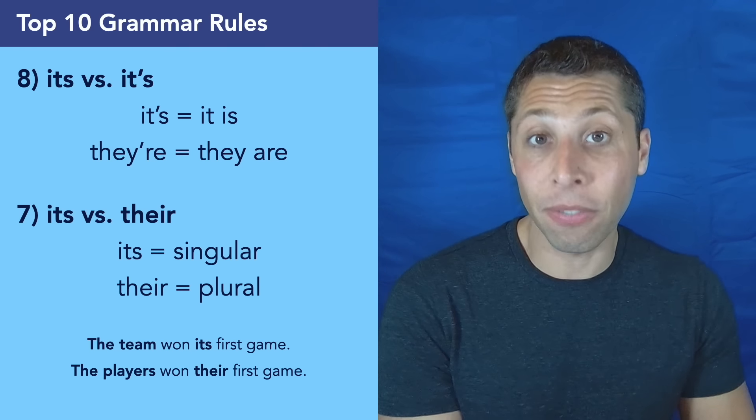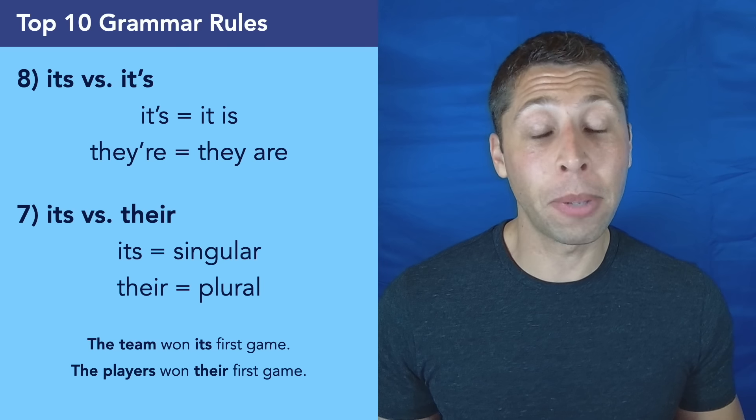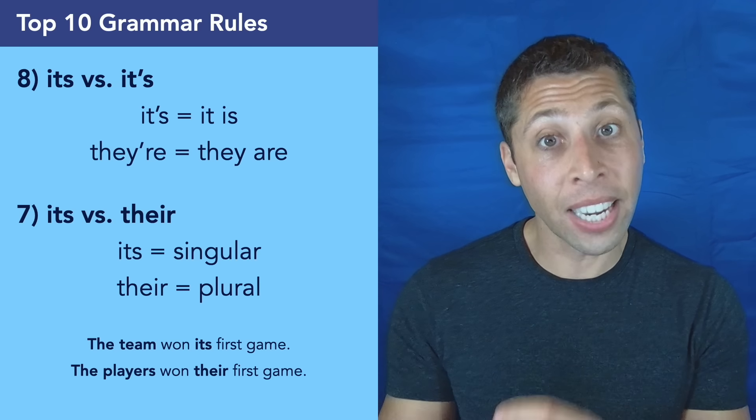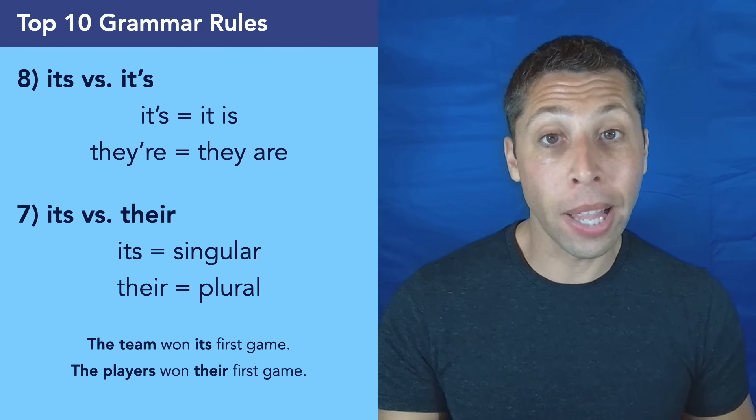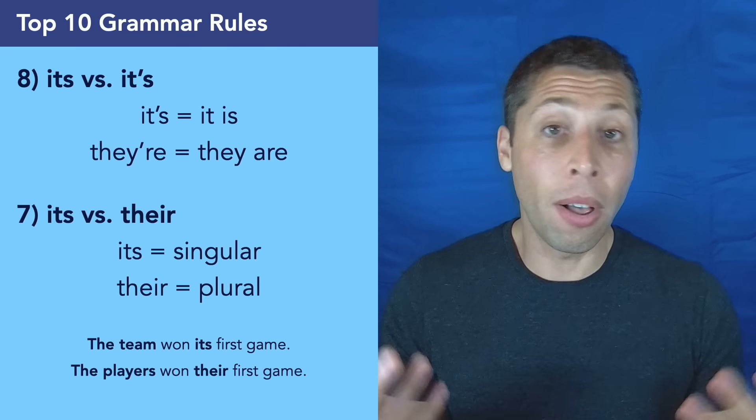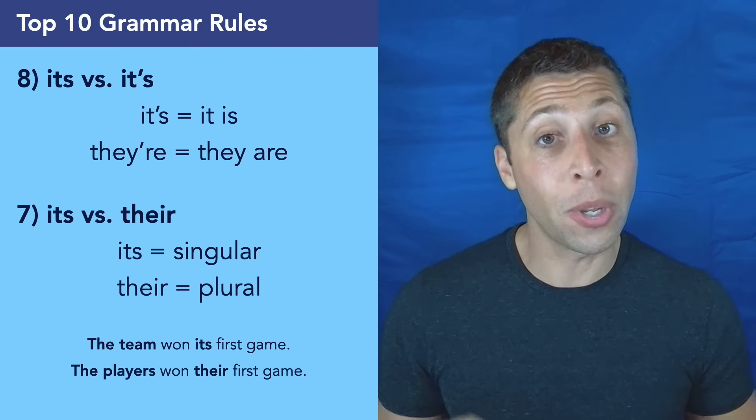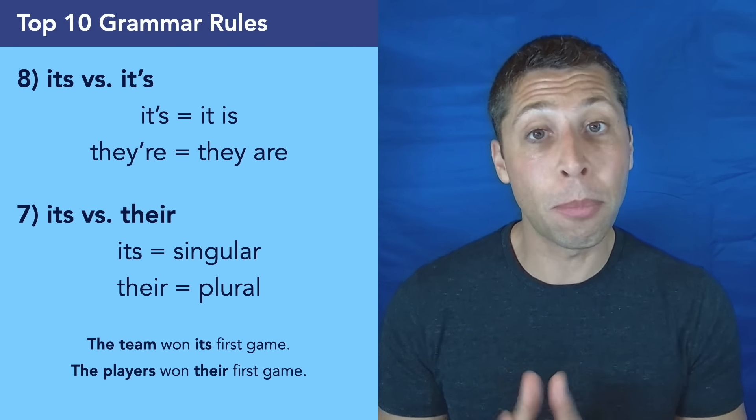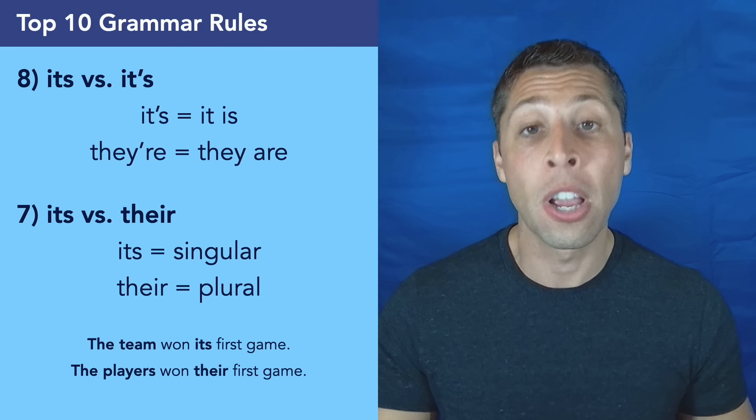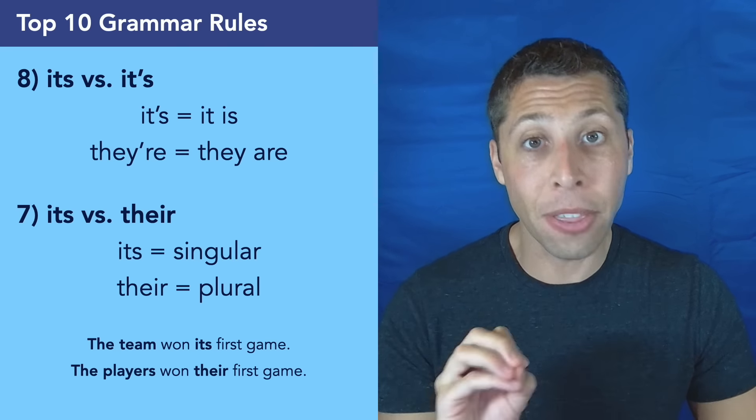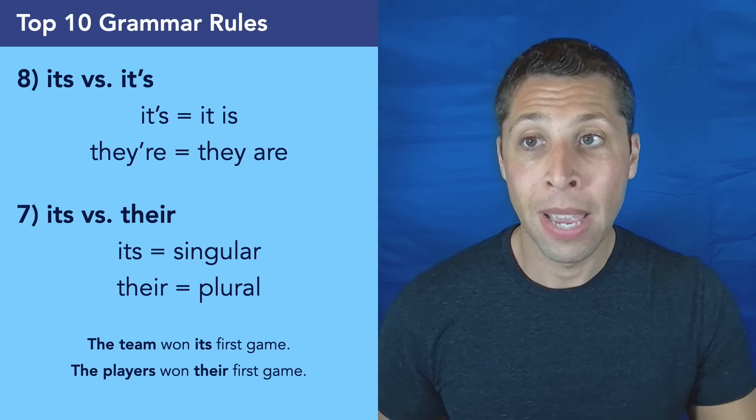Notice in the first sentence, the team won its first game. Now a team has lots of players on it, but it's still just one team, which is why we use the singular pronoun its. Whereas the second version of the sentence is very similar. The players won their first game. Well, multiple players. So that's why we use the plural pronoun their. This is a rule that we often get wrong when we talk. So it's very important that when we see it getting tested in the answer choices, we actually make an effort to apply the rule. Don't just go by your instincts, apply the rule. Think about singulars and plurals.